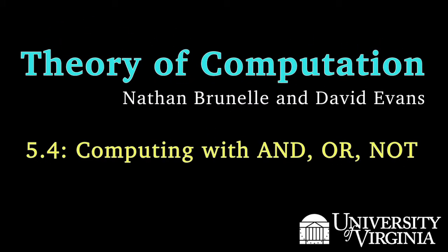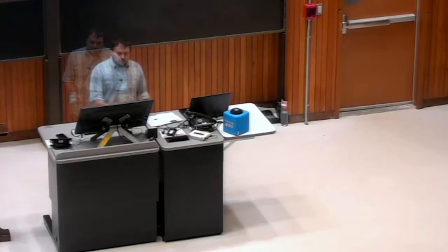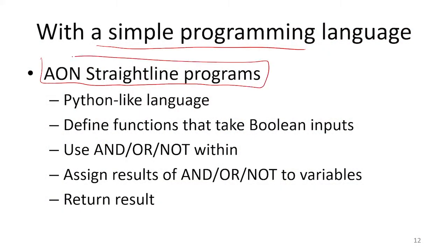What we're going to be doing next is we're going to be using a simple programming language in order to do majority. We call this programming language AON for and-or-not straight line programs.